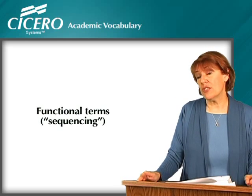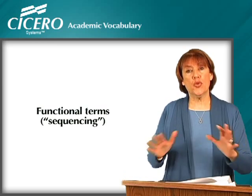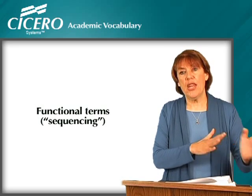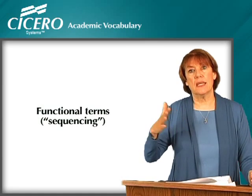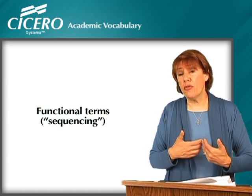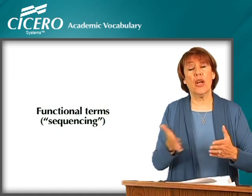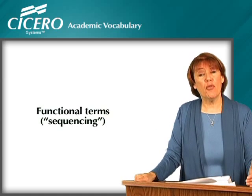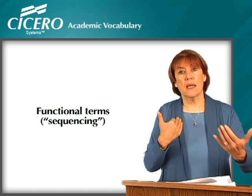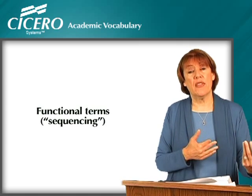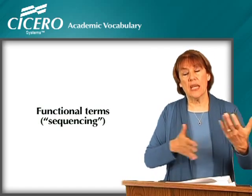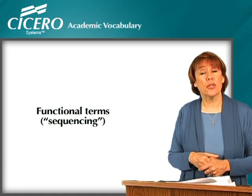One of the biggest challenges students face is that they often think history is compartmentalized — read chapter one and that part of history is done. They don't recognize that history is not only sequential, but that earlier events have an impact on subsequent events. There are legacies of individuals and echoes in history. For example, the Civil War was not perhaps the first time the United States was on opposing sides — you can go back to the American Revolution, where you had patriots and loyalists. Those echoes in history are where the functional terms come in.